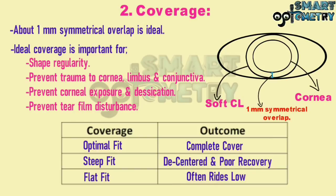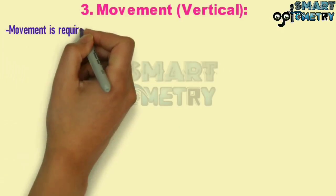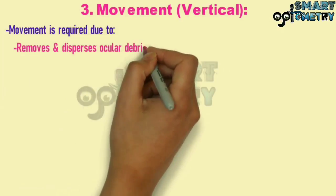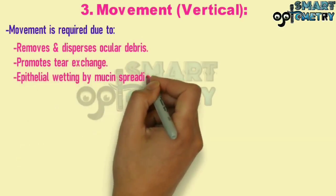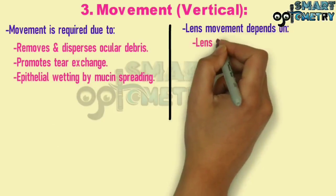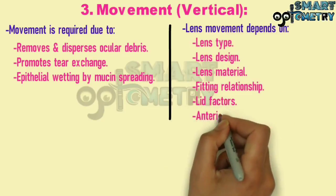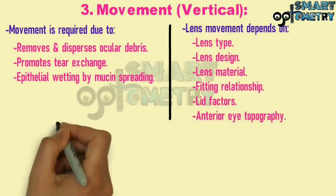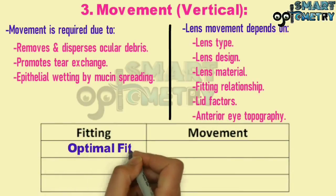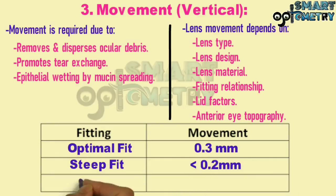3) Movement: Movement is required because it removes and disperses ocular debris, promotes tear exchange, and contributes to epithelial wetting by mucin spreading. Lens movement depends on lens type, lens design, lens material, fitting relationship, lid factors, and anterior eye topography. In an optimal fit, movement will be 0.3 mm; in a steep fit, less than 0.2 mm; in a flat fit, more than 1 mm.